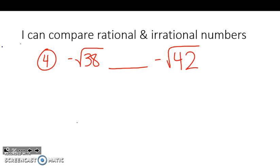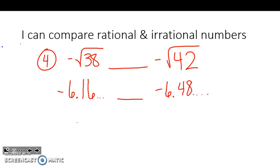Here's another negative one. If I have the negative square root of 38, go ahead and type that in — I get negative 6.16 and then some more numbers. And for the negative square root of 42, I get negative 6.48 and then lots of numbers.